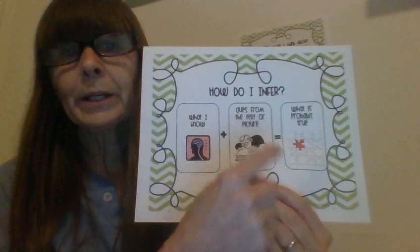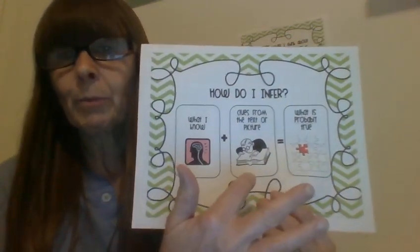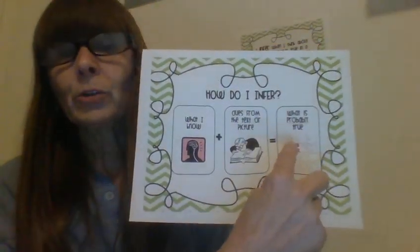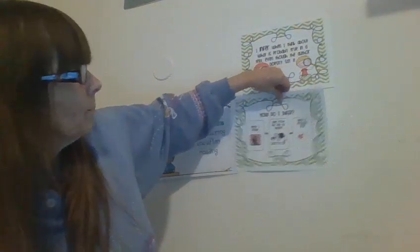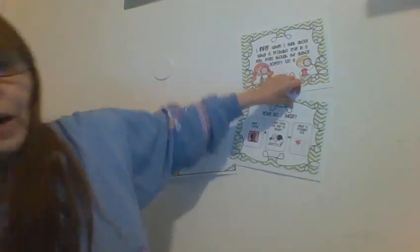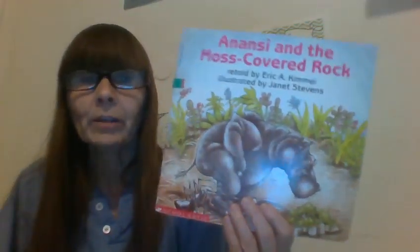How do I infer? Well, you infer when you take something you already know — what we call prior knowledge — and combine it with clues or pictures that are in the book or text that you're reading, and then you come up with what is probably true. Sometimes you're not always right, but generally you'll find there's enough to make your conclusions accurate. So we read this book before — if you had an opportunity to watch that video called Anansi and the Moss-Covered Rock.